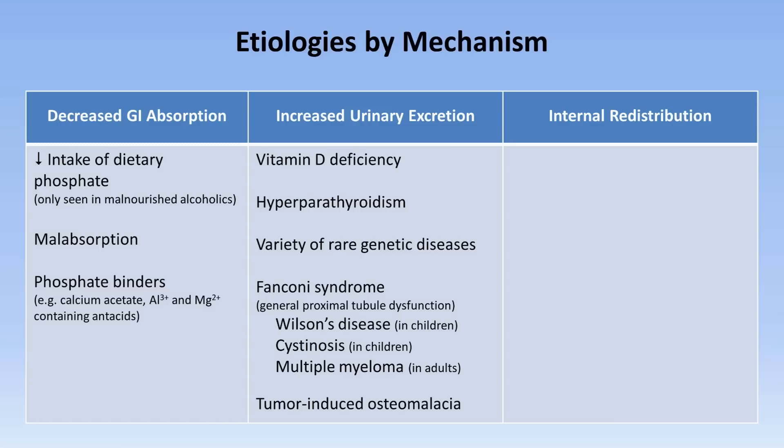The last mechanistic category is internal redistribution. Refeeding syndrome occurs when nutrition is reintroduced into a patient who has been starving. Increased insulin release, combined with dramatic increases in glycogen, fat, protein, and ATP synthesis, lead to a combination of hypophosphatemia, hypomagnesemia, and hypokalemia, in which the hypophosphatemia tends to be the most critical.